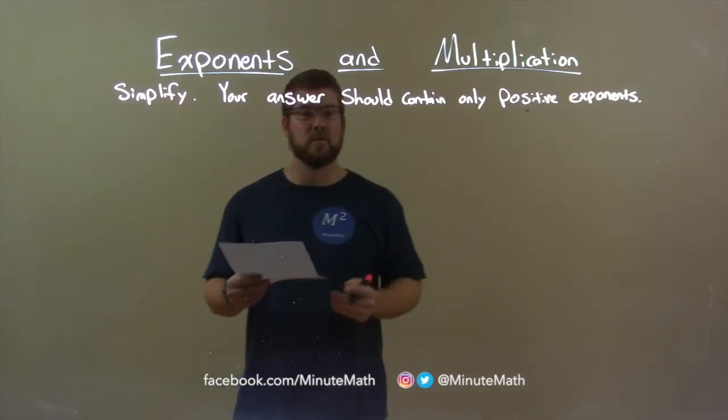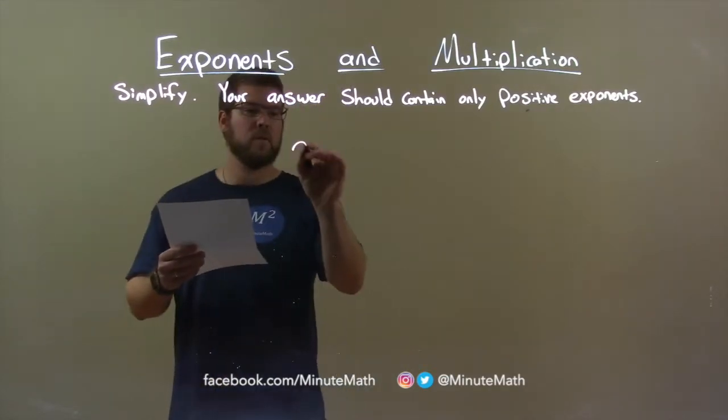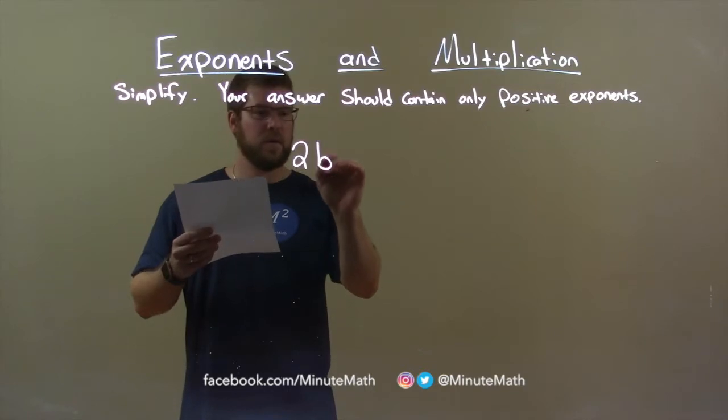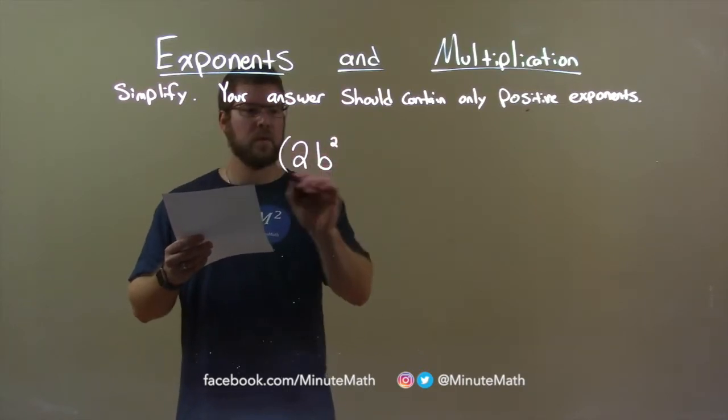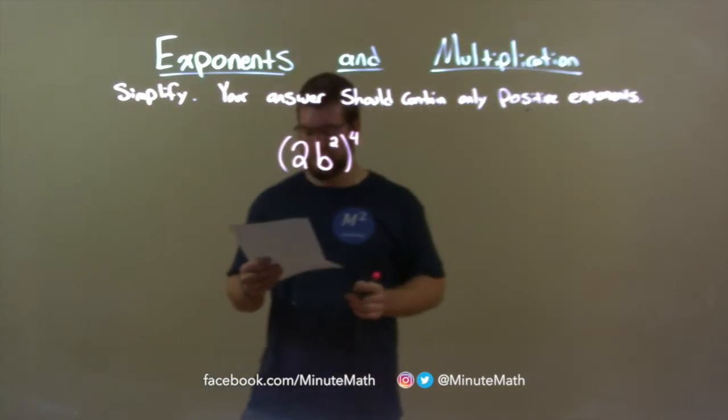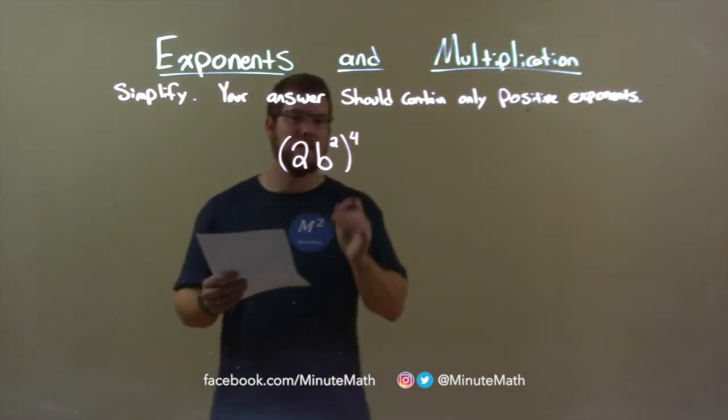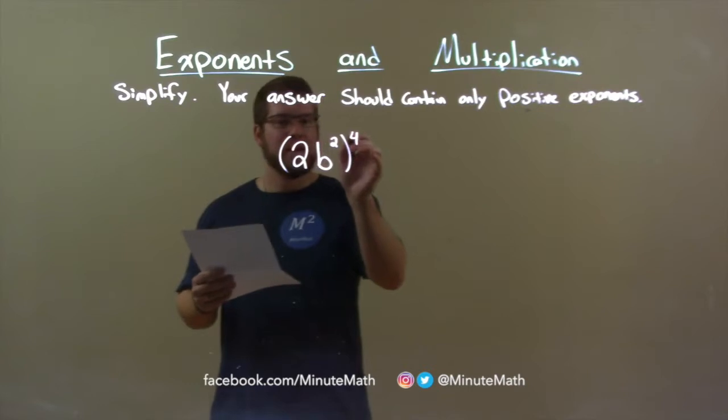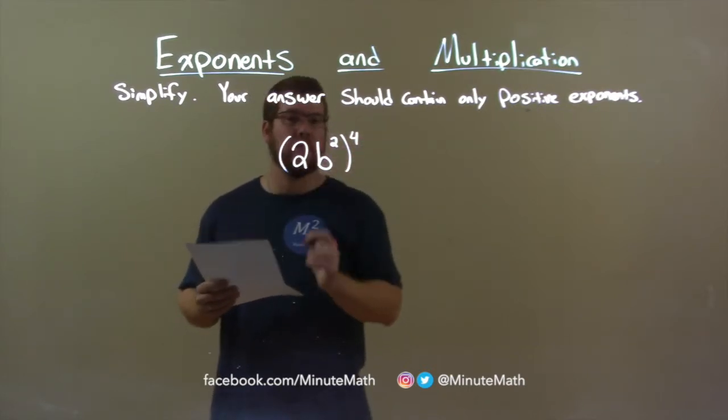If I was given this problem, we have 2b squared all to the fourth power. What I want to do is take this exponent and it gets multiplied to both parts within the parenthesis.